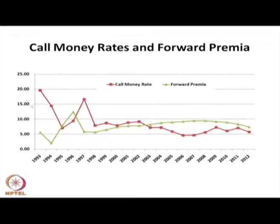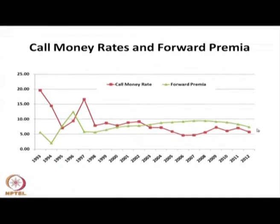The call money rate over the period is declining and remaining at around 5 percent. The forward premium, up to 1999–2000, was not moving in tandem with the call money rate. After that, it moved significantly in tandem with the call money rate. However, a differential still exists between forward premium and call money rate, indicating some degree of arbitrage available between the forex market and money market.